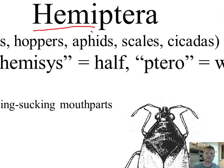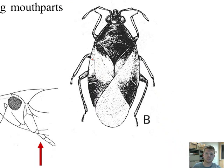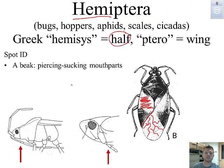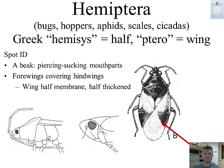Hemiptera — 'hemis' refers to half. If we notice the wings, half are solid and we can actually see a dividing line. The other half of the wing is going to be membranous. So half solid, half membranous. They also have a beak or piercing mouth part, which can do some major damage and helps with feeding. The ambush bug that hangs out on goldenrods is definitely a hemipteran and uses that piercing mouth part to kill its prey.